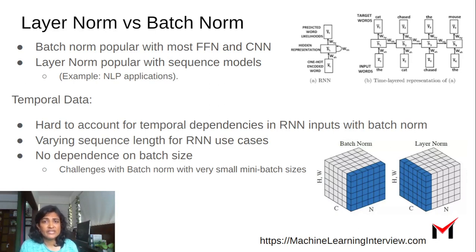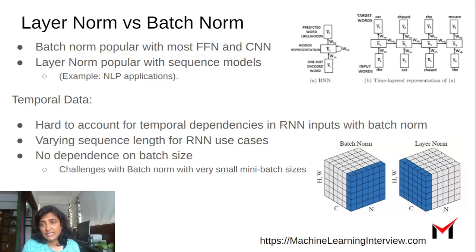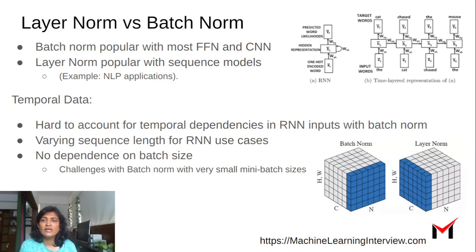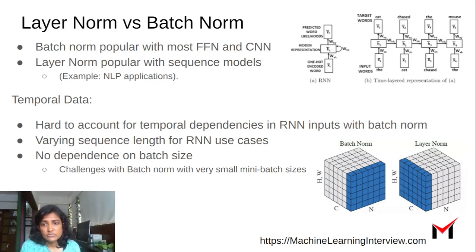Layer norm is used where there are temporal dependencies because it's done at an instance level within a layer. There is also the issue of varying sequence length for RNN use cases, especially in NLP applications, and in these situations layer norm is better than batch norm. Finally, there is no dependence on batch size. Sometimes we can have mini-batches which are really small, in which case it does not make sense to do batch norm because we do not have enough examples to compute the statistic on, and layer norm makes more sense. In those situations it's preferable to use layer norm over batch norm.